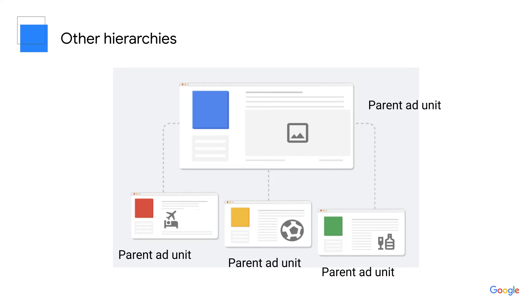As a publisher, you know your site best. Map out what your inventory structure looks like and write this down on paper or in a document. Note where you want to place ads and whether you want those ad units to be parent or child ad units. This will be helpful to refer to when you're setting up your ad inventory in Ad Manager.